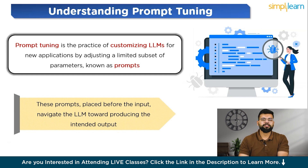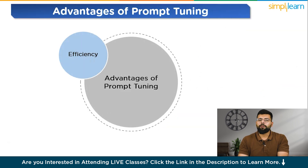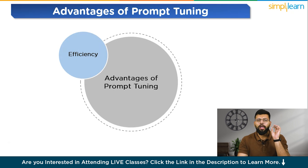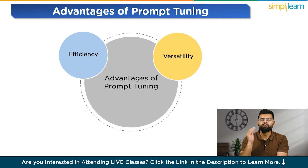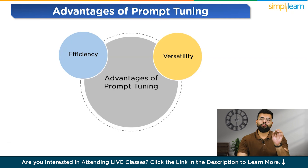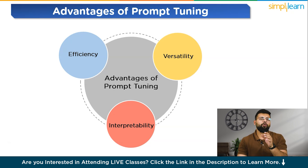The advantages of prompt tuning: first is efficiency — unlike comprehensive model fine-tuning, prompt tuning modifies only a select few parameters, enabling quicker task-specific model adjustment. Then comes versatility — this approach is applicable across a spectrum of tasks, from text generation and analysis in NLP to image recognition and automated coding, showcasing its adaptability to different domains. Then comes interpretability — the modifiable prompt parameters allow examination of how the model's output generation is influenced, offering insights into the model's processing.